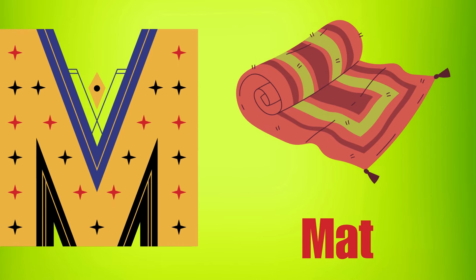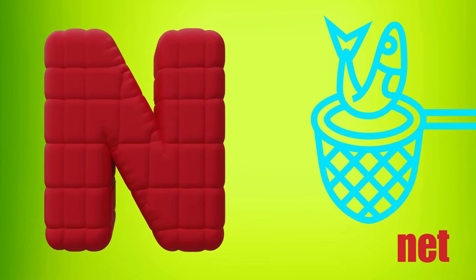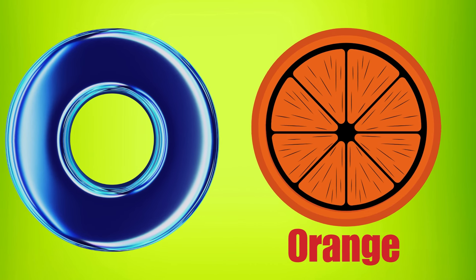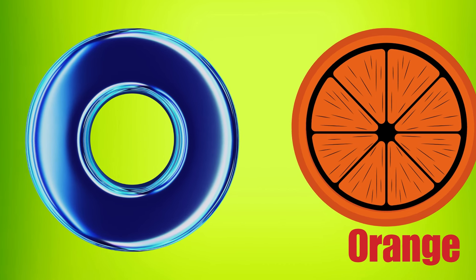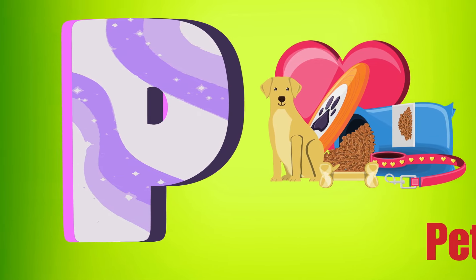M is for Mat, M-M-Mat. N is for Net, N-N-Net. O is for Orange, O-O-Orange. P is for Pet, P-P-Pet.